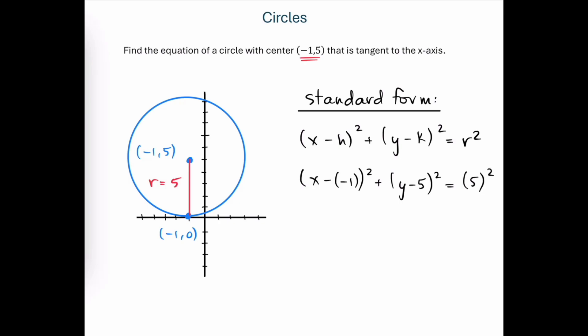Now let's clean this up just a tad by calling this x plus 1 quantity squared. The y minus 5 binomial looks fine. And let's also call 5 squared 25. And this is the equation of our circle written in the standard form.